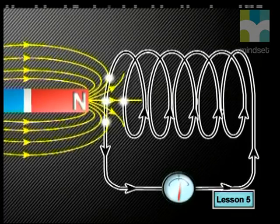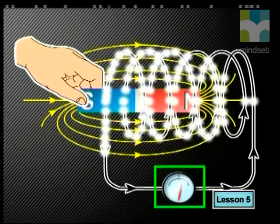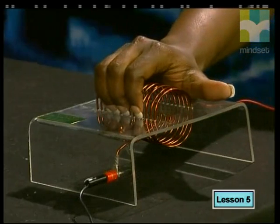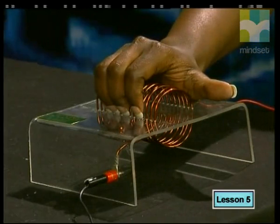When the north pole of the magnet is pushed into the coil, a positive reading is detected on the ammeter. This indicates that the direction of the current around the coil is in an anti-clockwise direction. Remember, whenever a current passes through a coil, a magnetic field is set up around the coil and the coil becomes an electromagnet. Because we know the direction of the current, we can find the direction of the magnetic field created in the coil. For an electromagnet, when the direction of the current is anti-clockwise (positive), the direction of the magnetic field is also positive, pointing out of the coil.